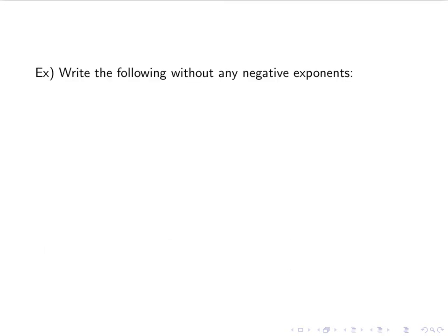Now we're going to include some division and multiplication. We have x cubed, y to the negative 2, z to the negative 1. Anything with a negative exponent gets moved to the denominator with a positive exponent. So x cubed stays where it is, y to the negative 2 becomes 1 over y squared, z to the negative 1 becomes 1 over z. We end up with x cubed over y squared z.